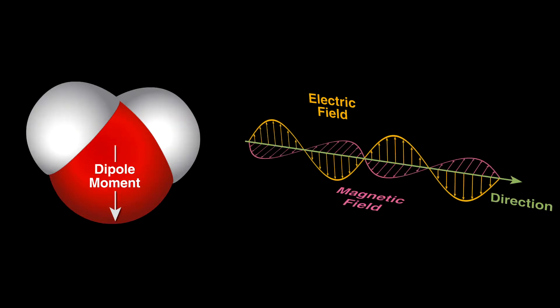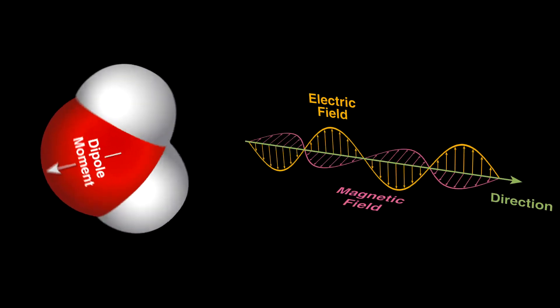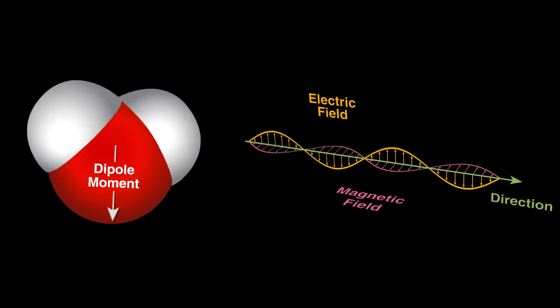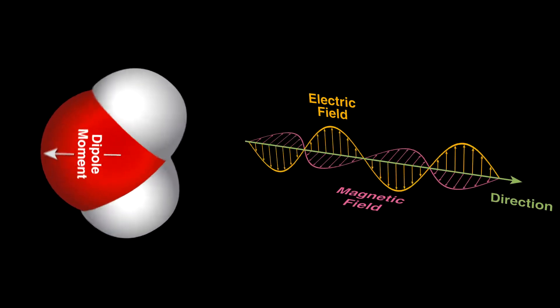Water will try to align with the radiation's electric field. The changing field rocks the water molecules back and forth rapidly, and molecular friction from this creates heat as the motion disrupts the hydrogen bonds between neighboring water molecules.